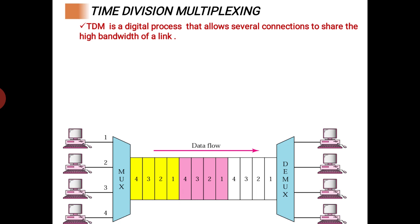Here we have four computer systems at the multiplexer end and four at the demultiplexer end. At the cable, four time slots are represented in different colors — white, pink, and yellow. Each color block has four slots. The single color indicates one frame, and one frame has four time slots.